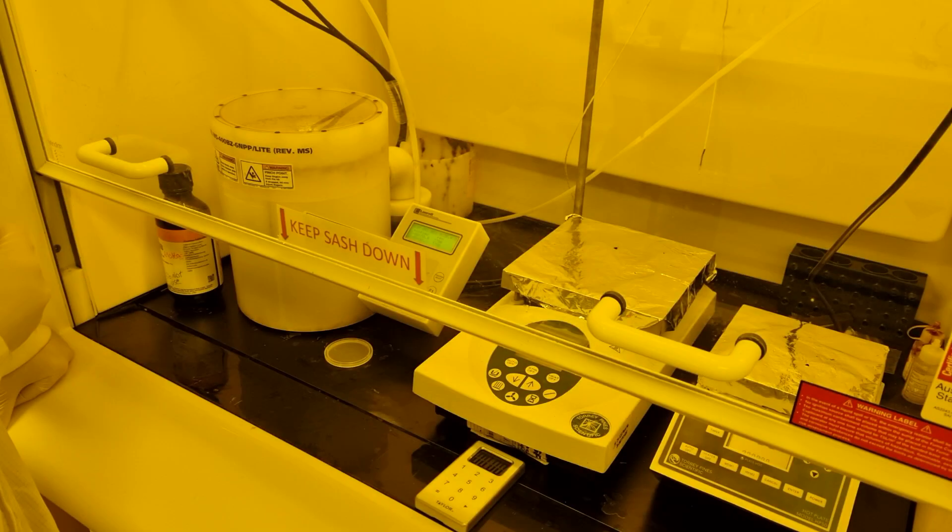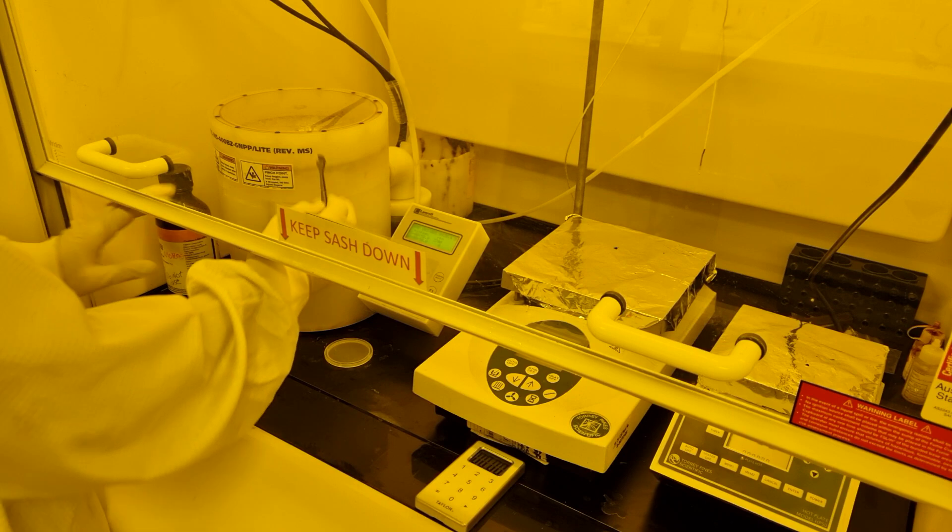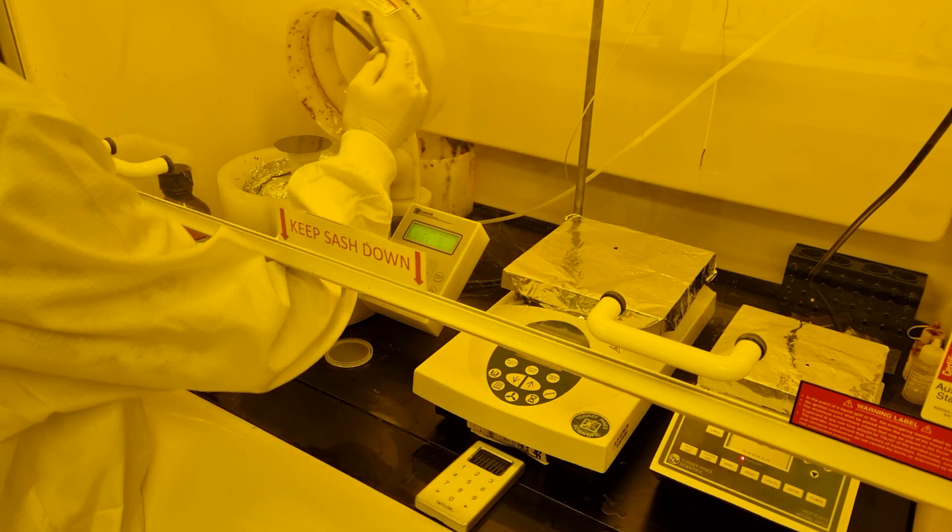So 20-25 is about 25 microns thick, while 2100 is 100 microns thick. Spinning faster will make the film thinner and spinning slower will result in a thicker film.